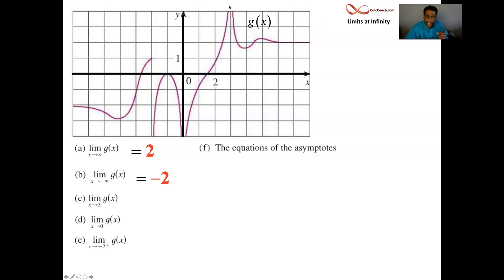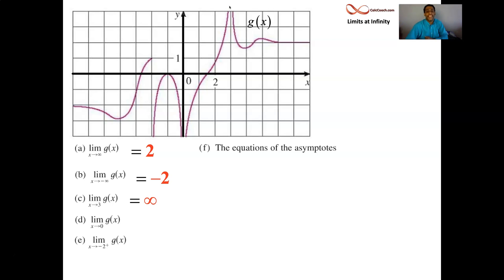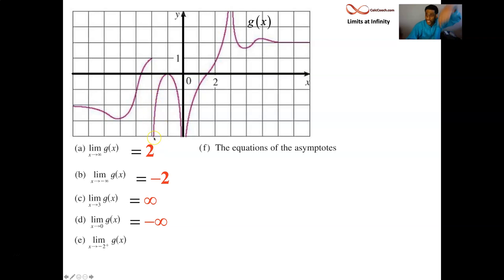There's a difference between a limit being infinite and a limit as x goes to infinity — make sure you keep those straight. How about the limit as x goes to 0? We have the opposite effect: both sides dive down to minus infinity. What about the limit as x goes to negative 2 from the right-hand side? Approaching negative 2, this function dives down to negative infinity.